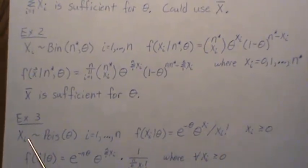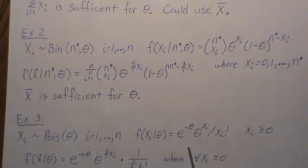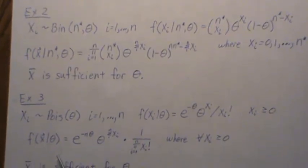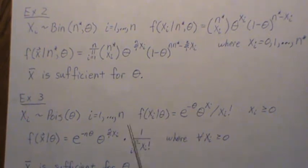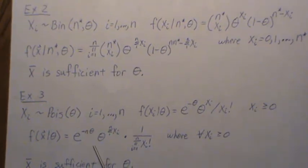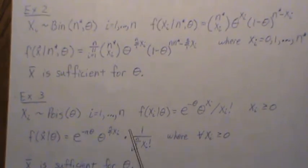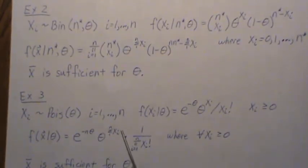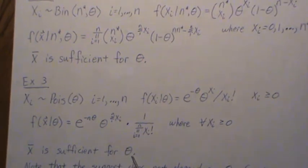In Example 3, Xi is Poisson with parameter theta, i from 1 to N. The distribution for one Xi is the standard Poisson, where Xi is 0, 1, 2, 3, etc. The joint density is the product F(X1)·F(X2)·F(X3)·... and using the Neyman factorization theorem, the 1/Xi-factorial product is H of X — a function of only the data — and the remaining piece is a function of the parameter and data only through the sum of the Xi. So X-bar is sufficient for theta.